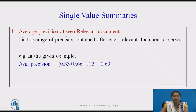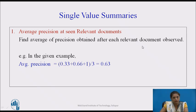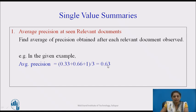The first method is average precision at seen relevant documents. We find the average of all the precisions obtained after each relevant document is observed. In our example we got three precision values, and their average gives 0.63 as the average precision for seen relevant documents.